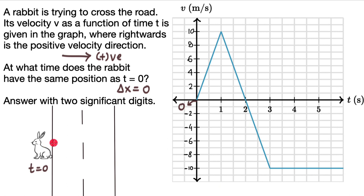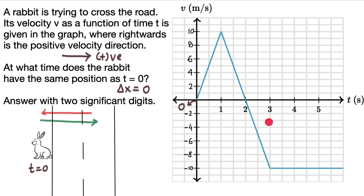This means the displacement would be 0 because it moved to the right — there was some positive displacement — then it moved to the left, and there was some negative displacement. The positive displacement and the negative displacement should be equal in magnitude; the difference must be equal to 0. And we know that in a v-t graph, the area under the curve gives us the displacement of the object in motion. Part of the area is above the x-axis, meaning positive displacement, and part is below the x-axis, meaning negative displacement. So positive displacement minus negative displacement should equal 0.